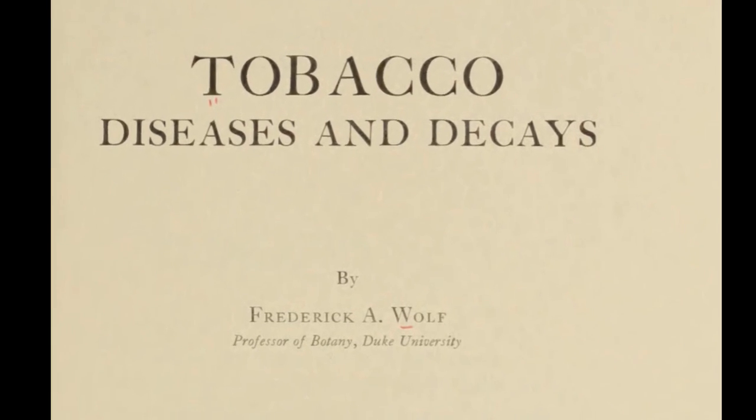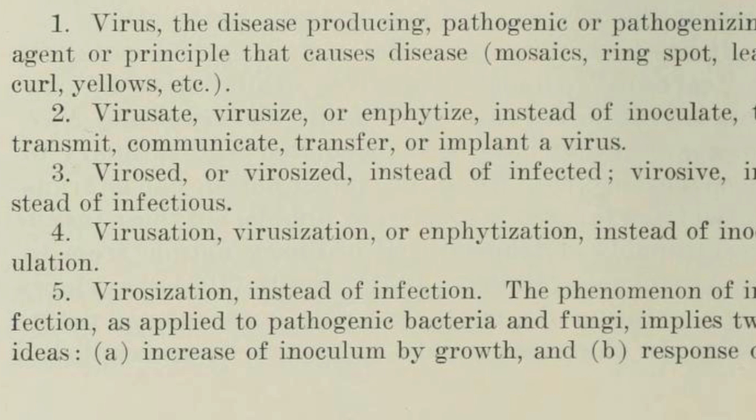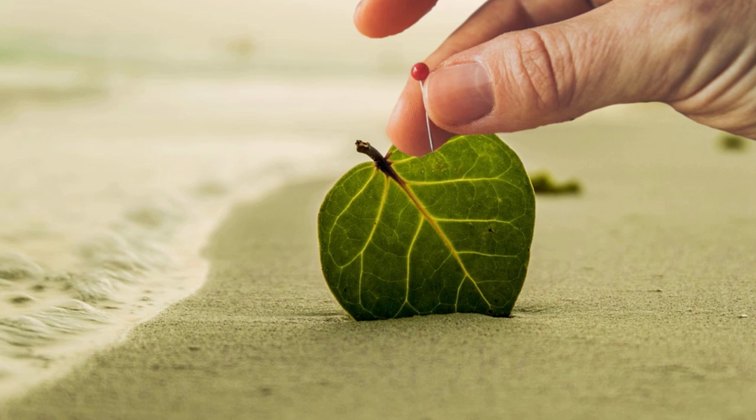Also worthy of a mention is the 1935 book 'Tobacco Diseases and Decay' by Frederick Wolfe. I enjoyed reading this one because on page 116, the virus hunters get particularly excited about proposing new virology terms including viro-sate, viro-size, viro-osed, viro-sized, viro-sive, viro-sation, and viro-sization — none of which gained any traction, thankfully. The section on tobacco mosaic goes on to describe how if you damaged leaves with an infected needle, localized death of the leaf occurs, allegedly due to the TM virus. Again, it is unclear why a virus needs to be invented to explain this finding, and how this replicates what happens in nature.